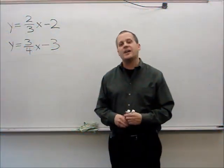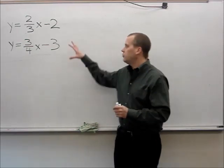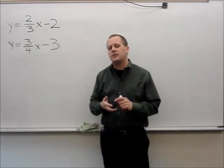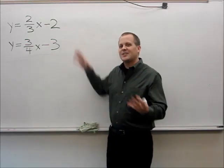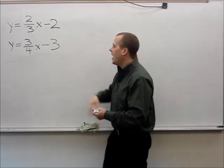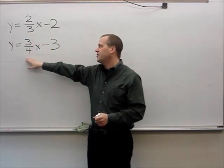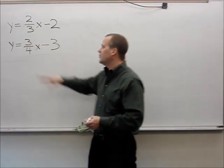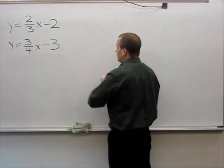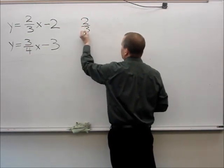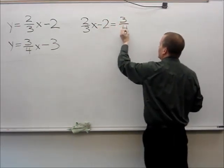Hi, welcome back everyone. In the last clip we talked about the equal methods process when one equation had a fraction. This time we have two equations with two fractions. I've got y equals two-thirds x minus 2, and y equals three-fourths x minus 3. Since they both start with y, I'll make them equal: two-thirds x minus 2 equals three-fourths x minus 3.